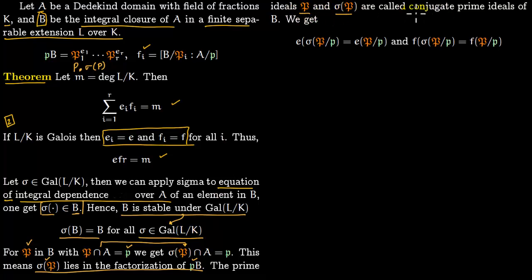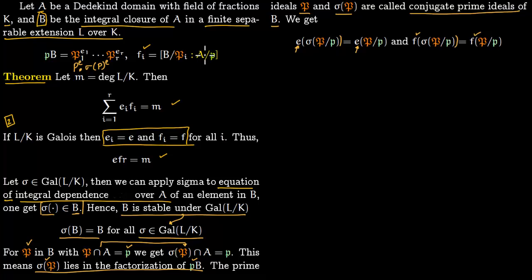The ideals P and σ(P) are called conjugate prime ideals of B. Since they are conjugate, if P appears with power e in the factorization of p, then σ(P) also appears with power e. Similarly, the residue field degree f — which is the degree of B/P over A/p — equals the degree of B/σ(P) over A/p. So the e's and f's are the same for all conjugate primes, again because σ(B) = B.